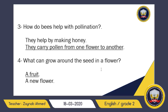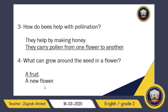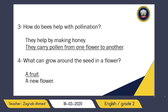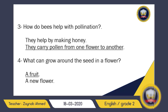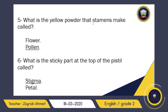Number four: what can grow around the seed in a flower — a fruit or a new flower? Of course, a fruit. A fruit grows around the seed.